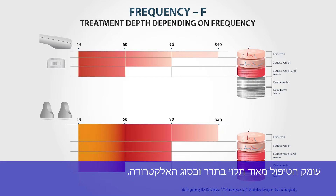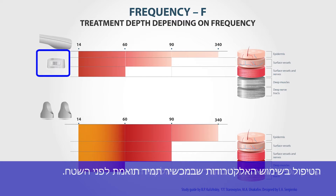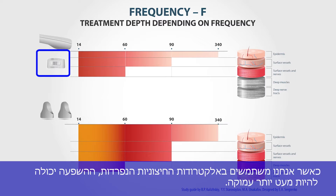The treatment depth may vary depending on the frequency and the electrode type. The treatment using the built-in electrode is always more surface-like. When you use the external splitted electrode, the influence can be quite deep.